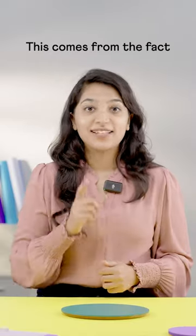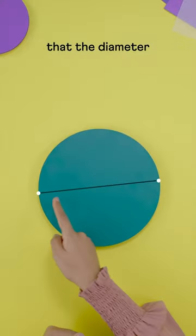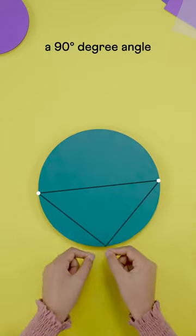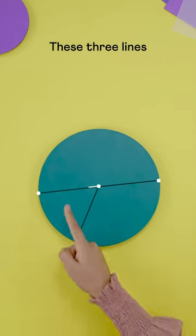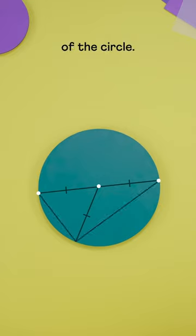But why does this trick work? This comes from the fact that diameter of the circle always makes a 90 degree angle with its boundary. We can prove it. These three lines are the radii of the circle.